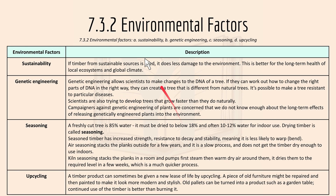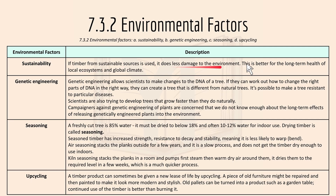Then we have 7.3.2 environmental factors, which include sustainability, genetic engineering, seasoning, and upcycling. If timber from a sustainable source is used, it does less damage to the environment, and this is better for the long-term health of local ecosystems and the global climate.